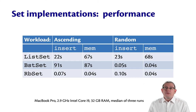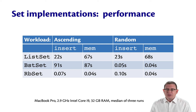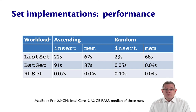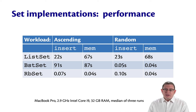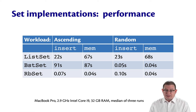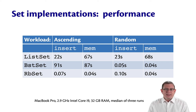By using these more efficient red-black tree operations, we get the performance that we wanted, both on the ascending workload and the random workload. This RBSet implementation gets insert and mem performance that's totally comparable to the same performance for the random workload from BST sets, and it's about the same whether we do an ascending or a random workload for RBSets.